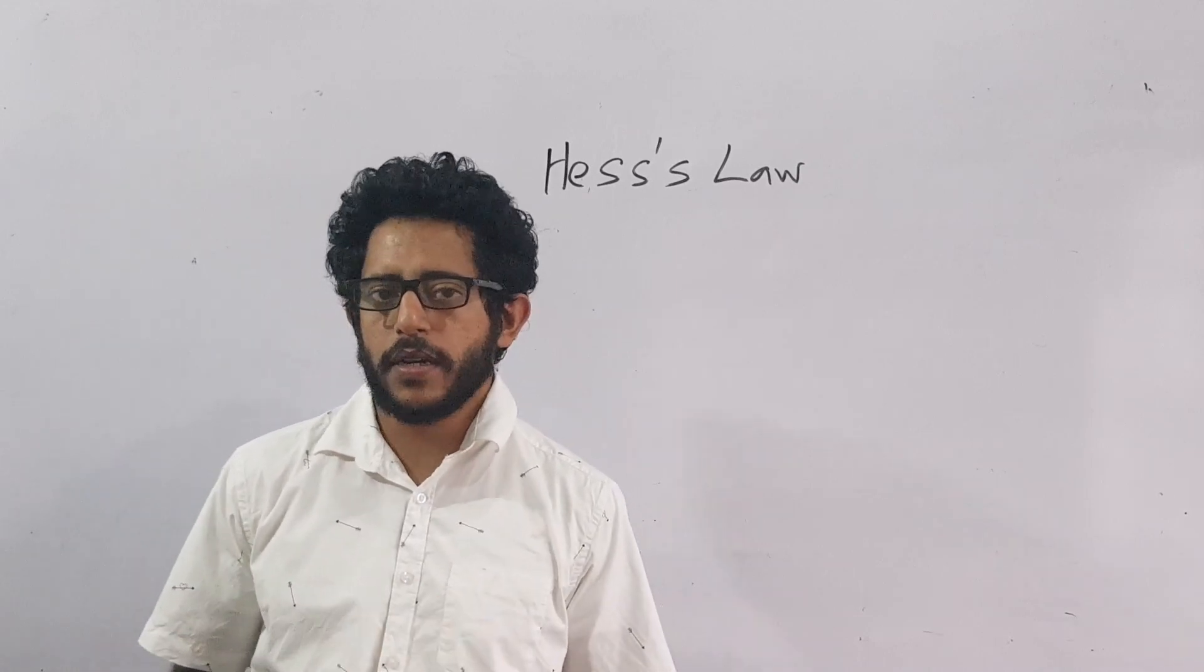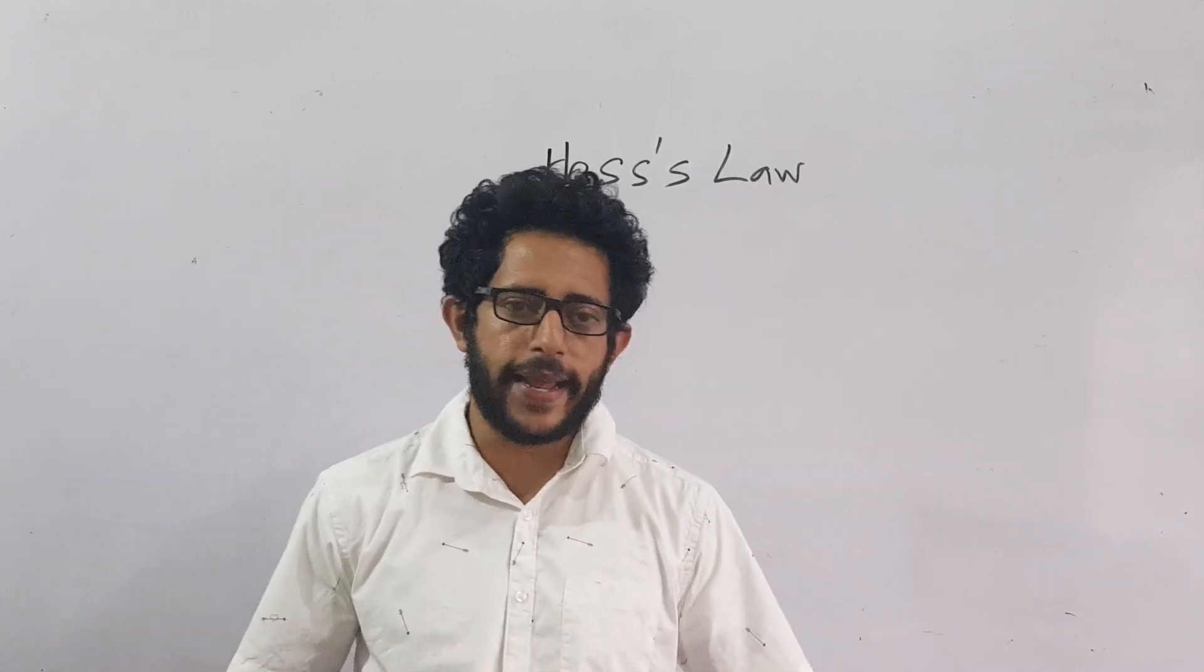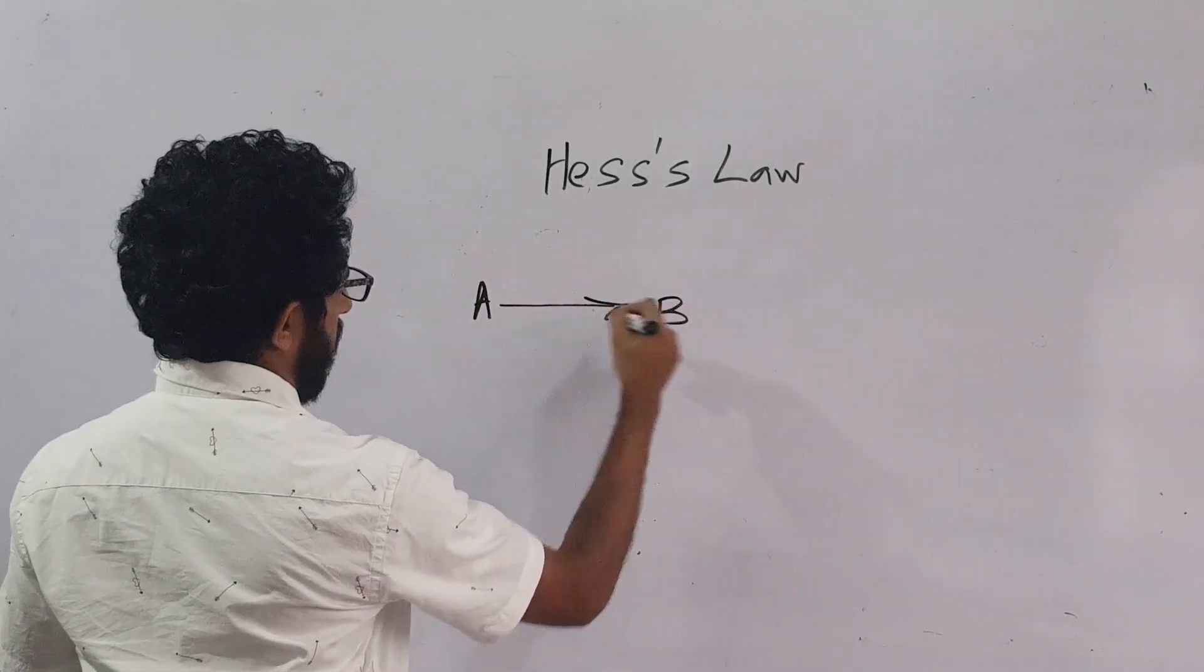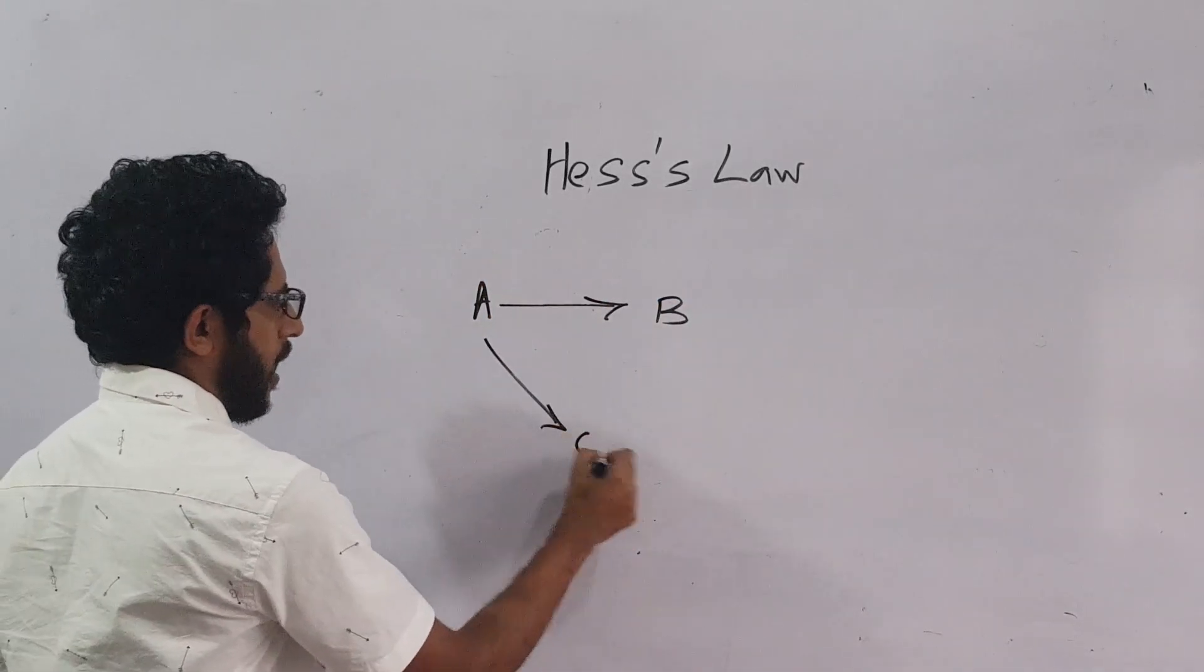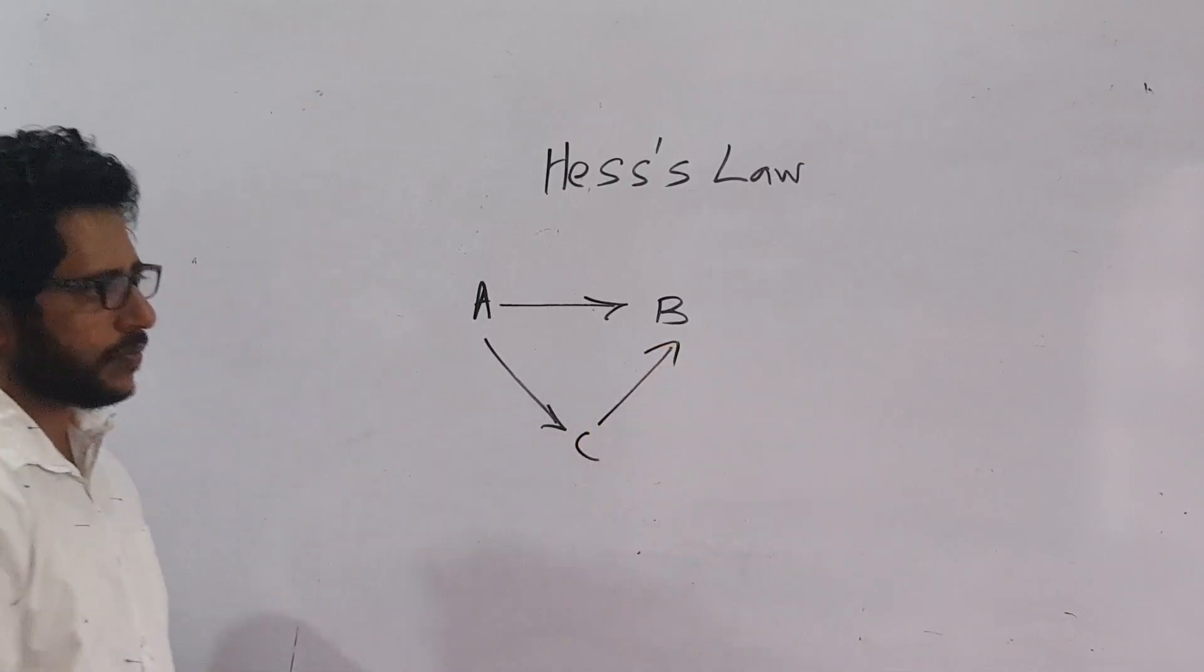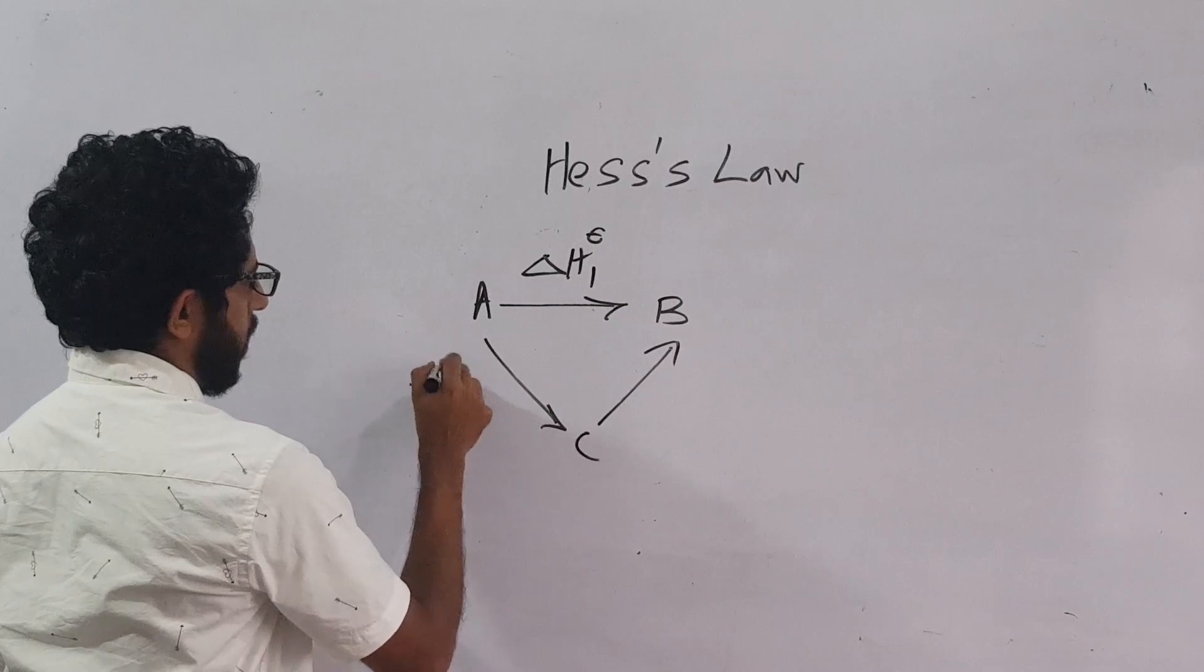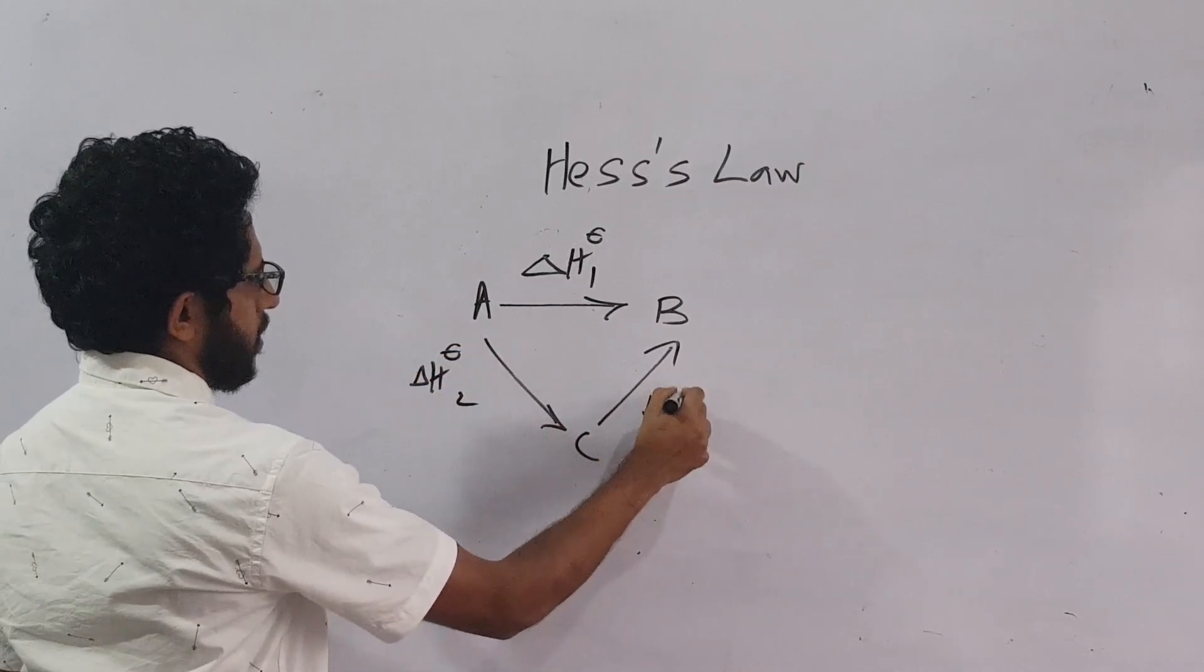It only depends on the initial compound or initial substance and the final substance. It doesn't take the path or the route it takes. For example, Hess suggested as A goes to B and A goes to C and then C goes to B, if this is delta H standard 1, this is delta H standard 2, delta H standard 3.